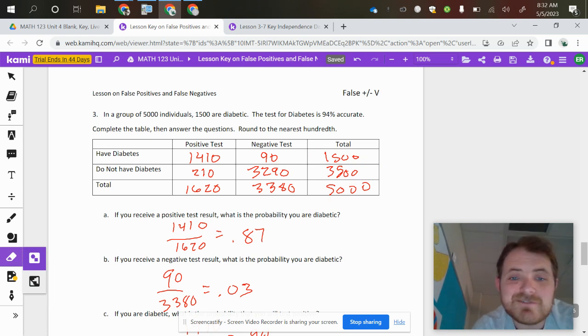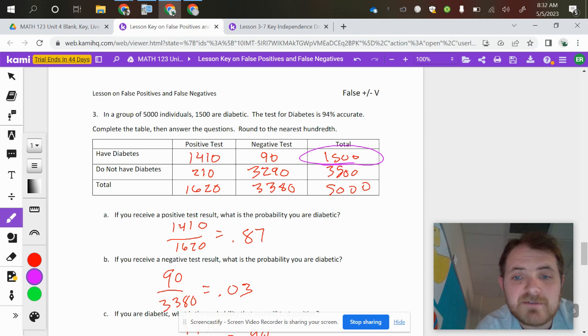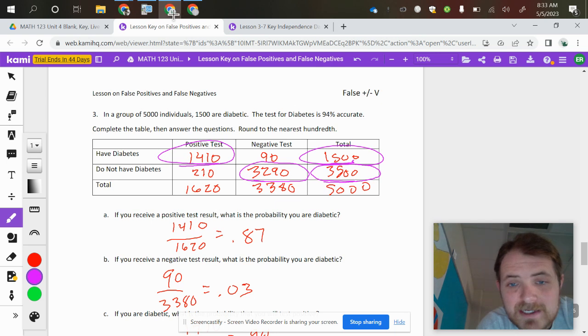So it says the test for diabetes is 94% accurate. This one's a little different because it doesn't say about false negatives, false positives, anything like that. So all of these numbers are coming from 94%. So if I take 94% of 1,500, if they have diabetes, 94% of them will test positive, making that answer right there. And then if 3,500 people are negative, 94% of that is 3,290, because if they're not having diabetes, 94% of them will test negative.